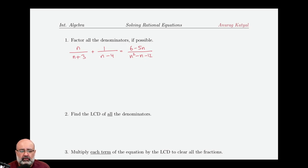All right, for this last one in the series, we factor all the denominators to start. So n plus 3 is just going to stay, n minus 4 is just going to stay. We do need to factor n squared minus n minus 12. There's no GCF.